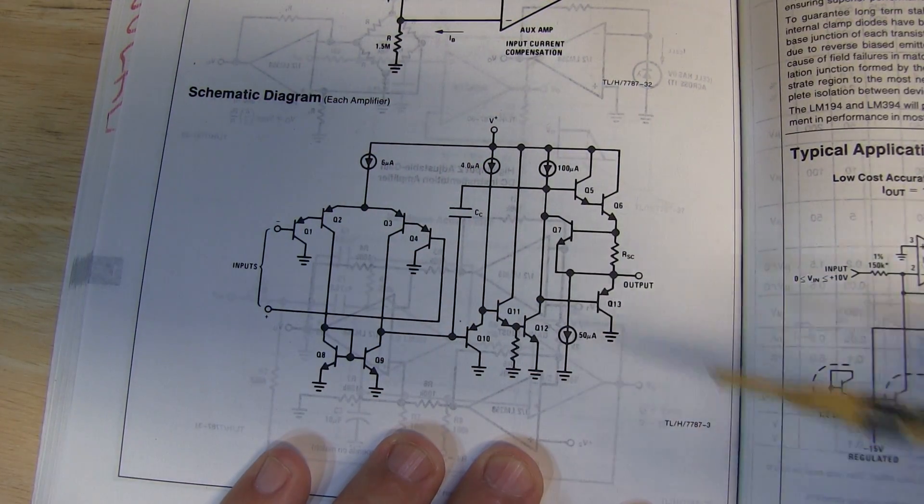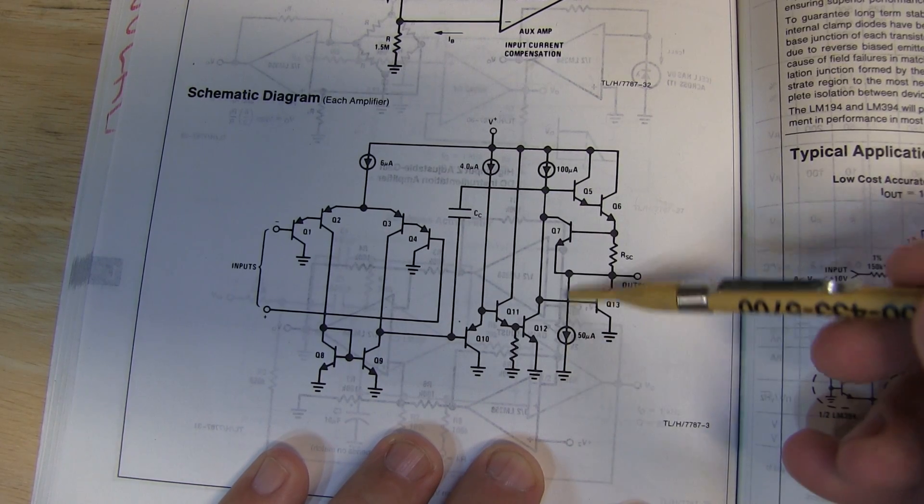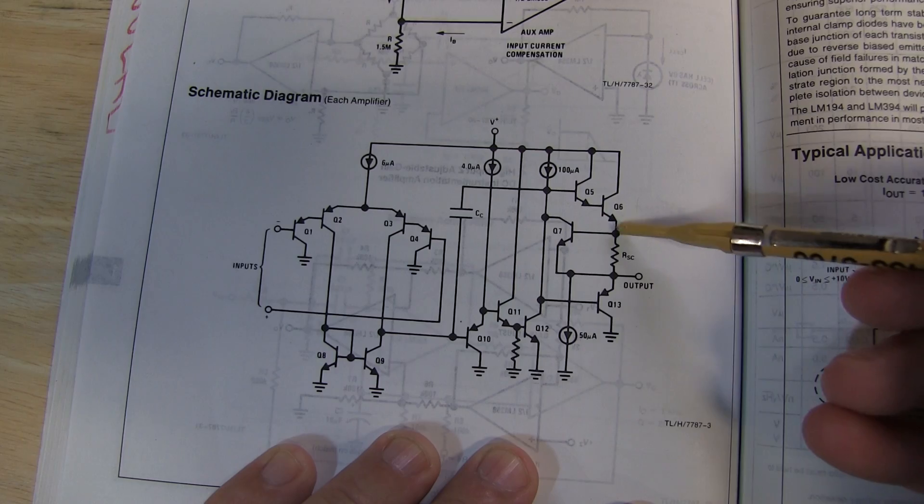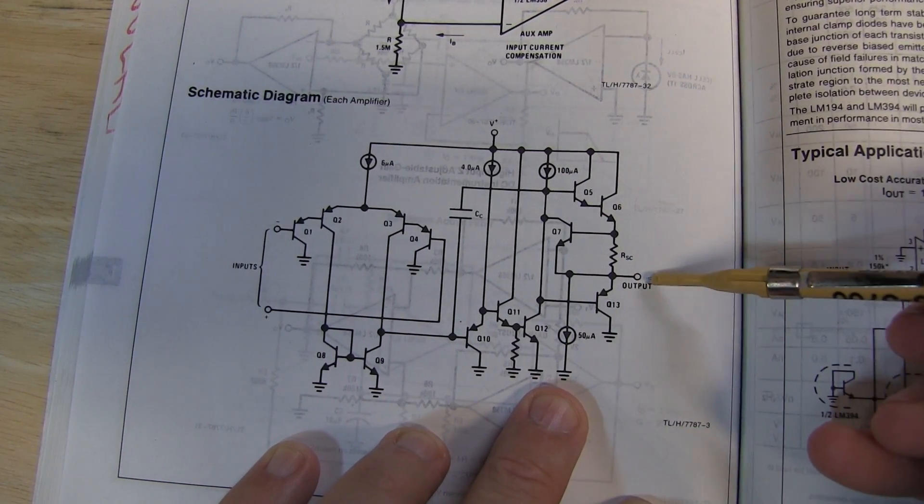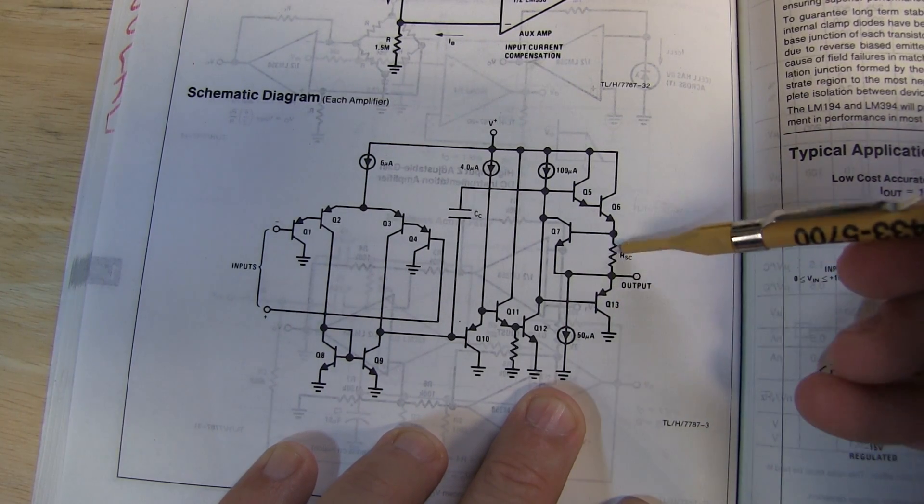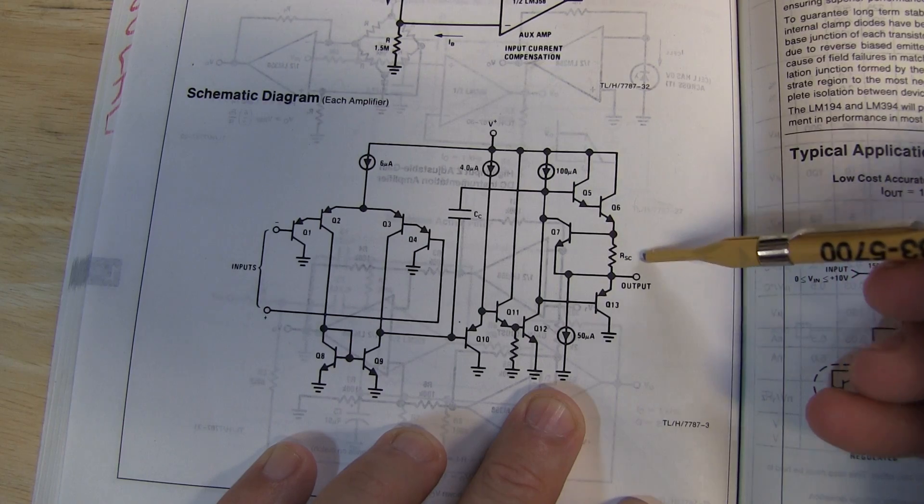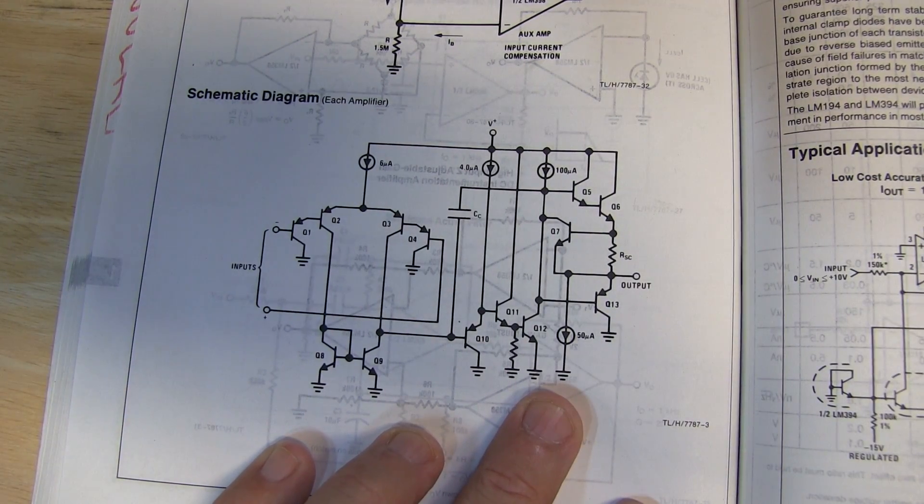Well, the key to that is this 50 microamp current source that you see here. The 50 microamp current source is going to keep Q5 and Q6 biased on a little bit longer until we have to sink more than that 50 microamps, then these transistors turn off. So that's why the waveform is dipping just a little bit below ground before those transistors turn completely off.